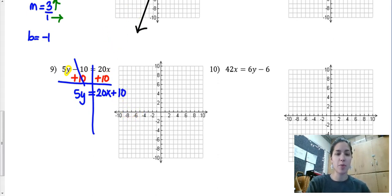And now to finish this up we will divide by 5. It's very helpful to me to show myself dividing each piece by 5 because then I see y equals 20 divided by 5 is 4. 10 divided by 5 is 2.